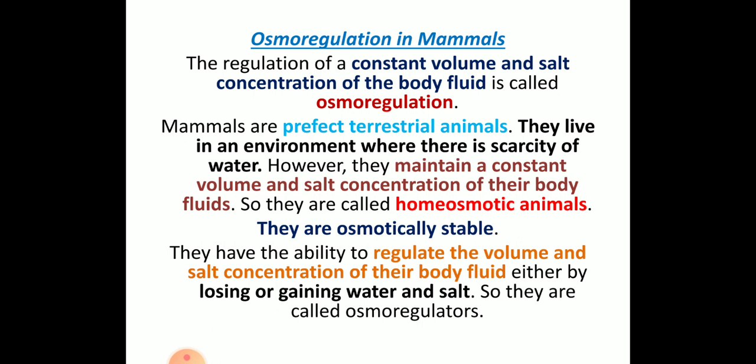Mammals are the perfect terrestrial animals because they live in different types of environments and different habitats, even with scarcity of water, and they maintain constant volume and salt concentration of their body fluids. That is why they are called homeo-osmotic animals — very important. Due to scarcity of water, uptake of salt, and maintenance of constant volume, they maintain their constant body fluids, and hence they are also called osmotically stable animals.